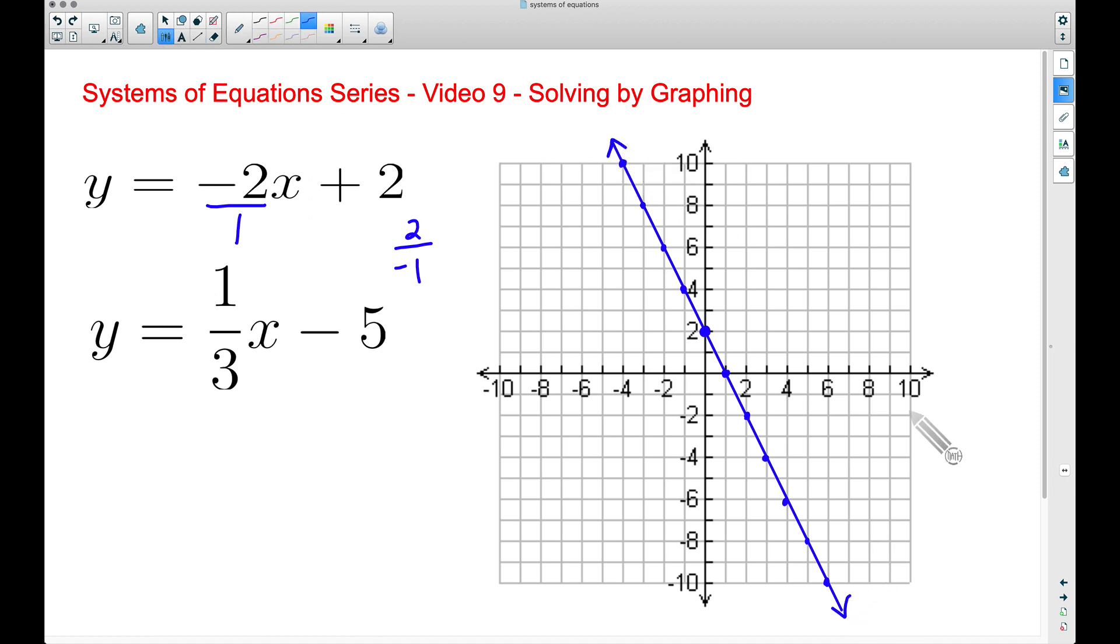Now our goal here is to graph two lines in this case. And we are looking to see where these two lines cross, if they cross at all. So looking at this second equation, y equals mx plus b. Our b is a negative 5. Be careful with your signs there. So that negative 5 is our y-intercept.